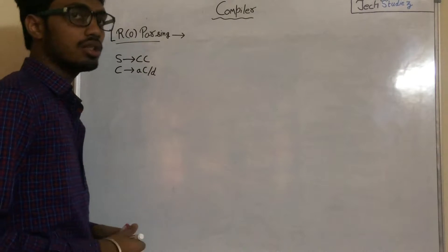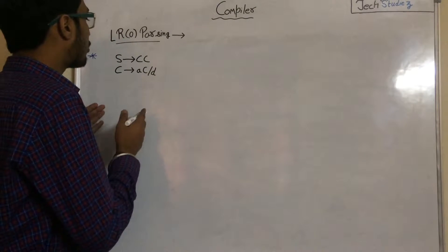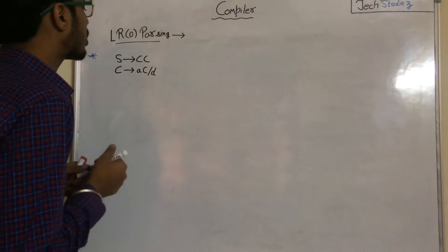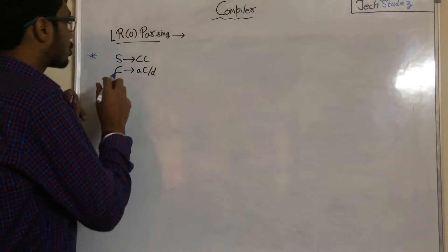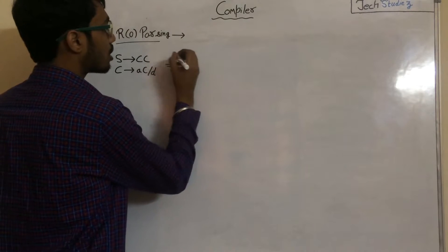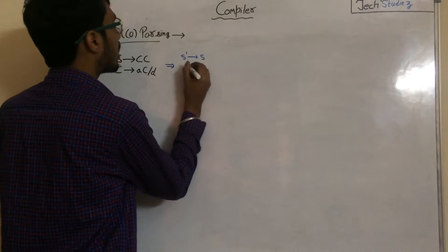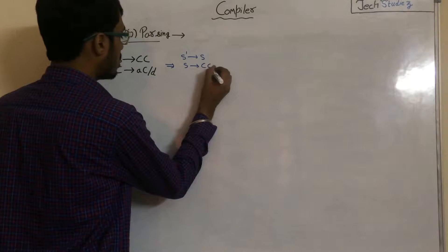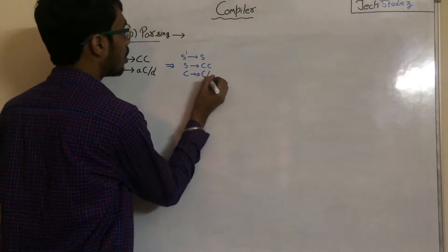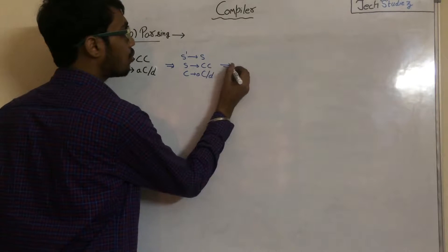Welcome to Tech Studies. Today in this lecture we will take an example of canonical collection and how LR0 parsing is done. Step one: we have to add one augmented production, so we add S' to S. The grammar productions are S to CC, and C to AC or D.